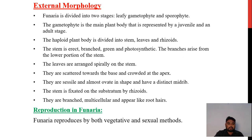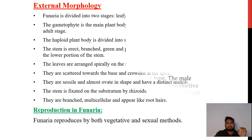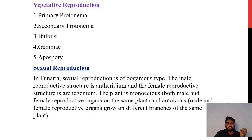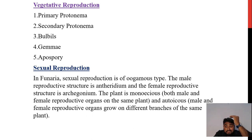The reproduction of Funaria: Funaria reproduces by both vegetative and sexual methods. Vegetative reproduction occurs by primary protonema, secondary protonema, bulbils, gemma and protonemal brood bodies. In sexual reproduction, Funaria is oogamous. The male reproductive structure is the antheridium and the female is the archegonium. The plant is monoecious, meaning both male and female reproductive organs are on the same plant. It is also autoecious, where male and female reproductive organs are on different branches of the same plant.